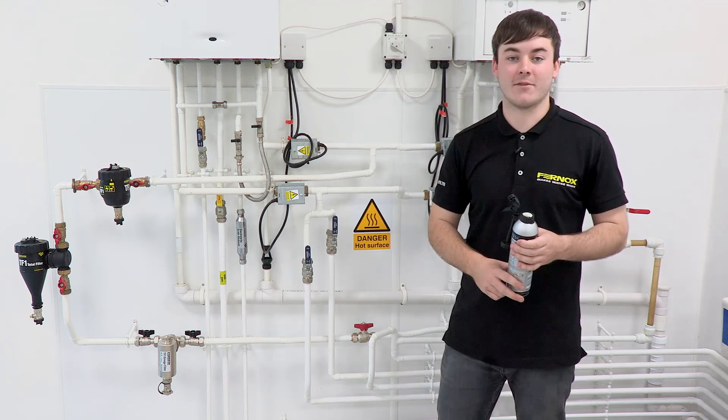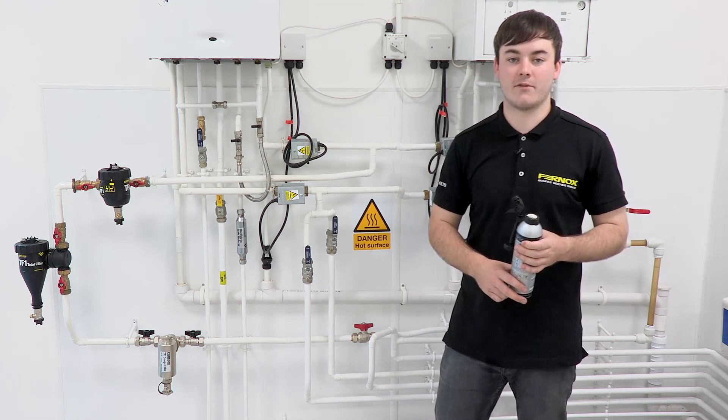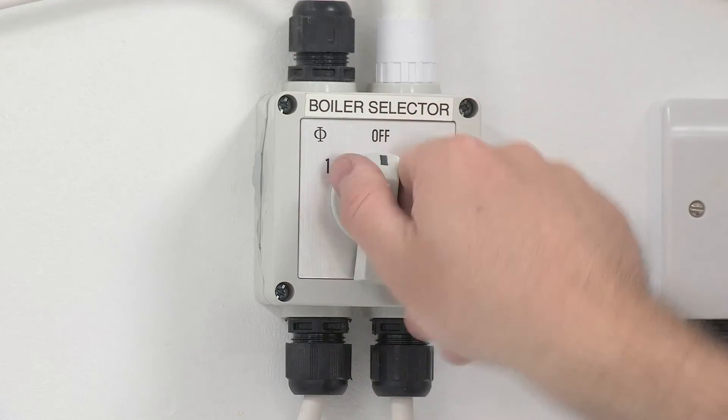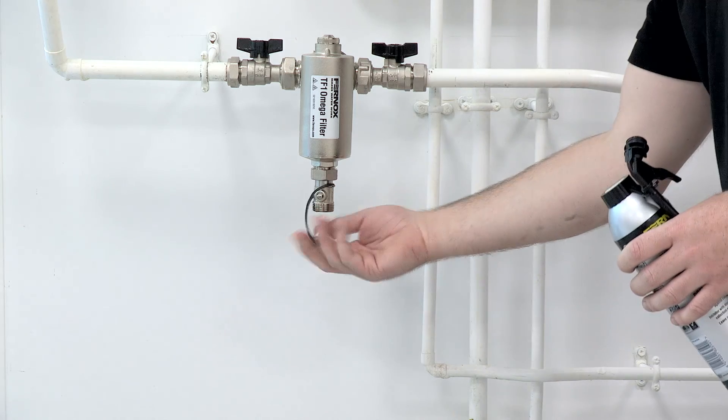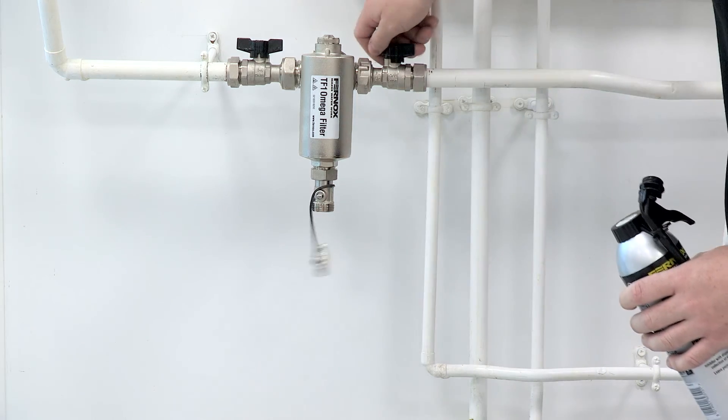How to dose a Furnox express can via a Furnox TF1 filter. First of all you want to switch off your boiler. Remove the drain valve cap and close the inlet and outlet valves.